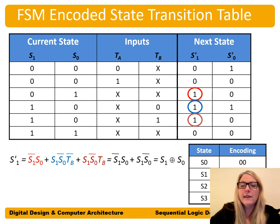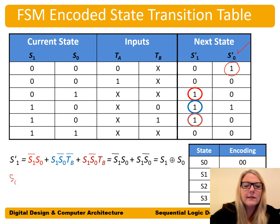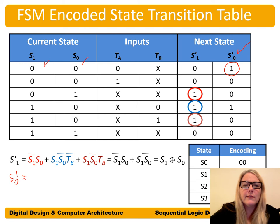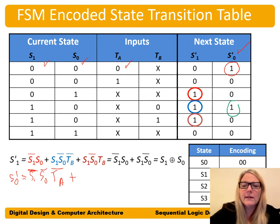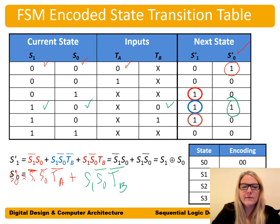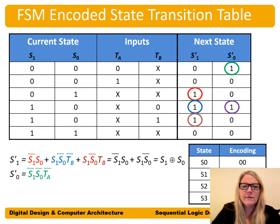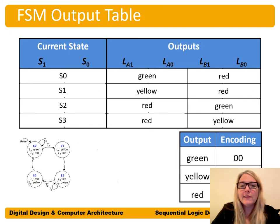Using the same process for next state bit 0: S0 prime equals S1-bar AND S0-bar AND TA-bar, OR S1 AND S0-bar. We now have our two next state equations and can implement them in our next state logic circuit.